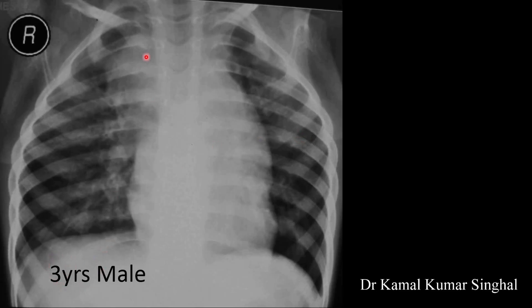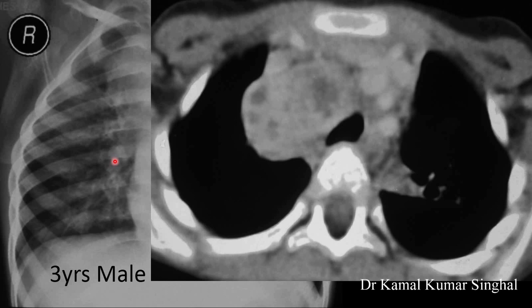This is another 3-year-old male child with a lymph node in the right paratracheal and hilar region — a well-defined shadow — and non-homogenous opacities in the right middle and lower zone. On the corresponding mediastinal window of the CT scan, you can appreciate hypodensities inside the mass indicating central necrosis. Focusing on the trachea, there is flattening on the right side due to compression from the lymph node.